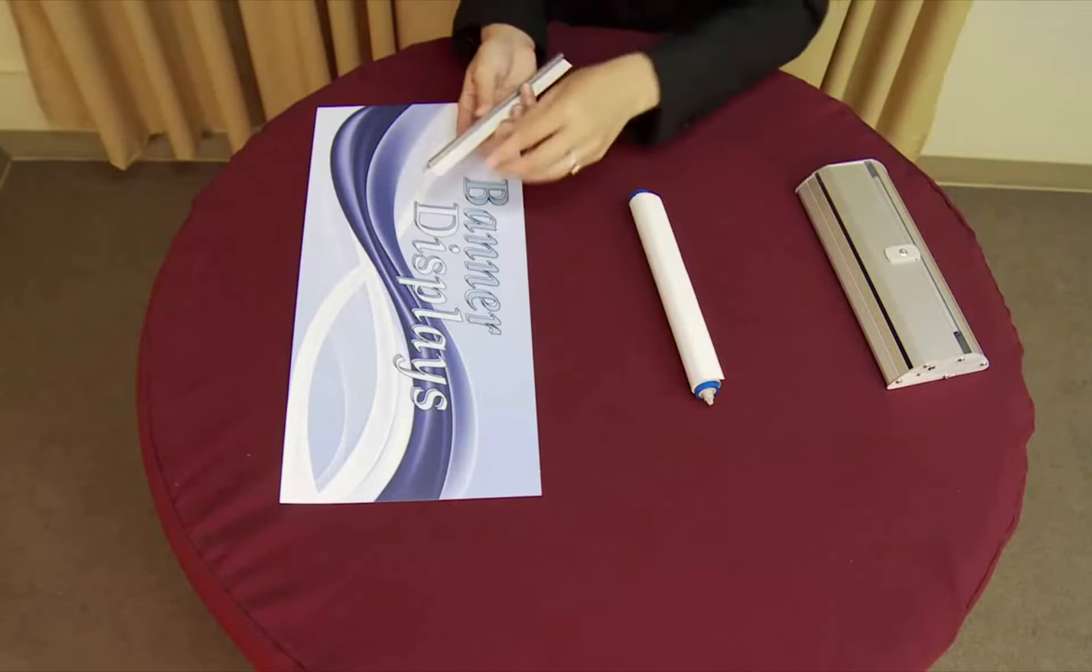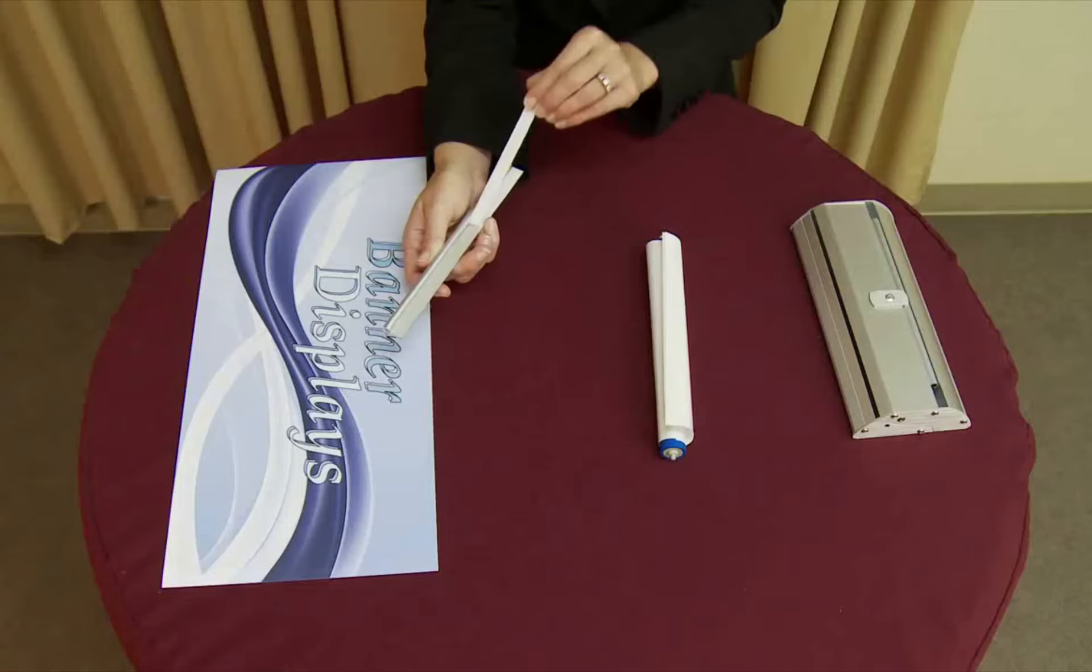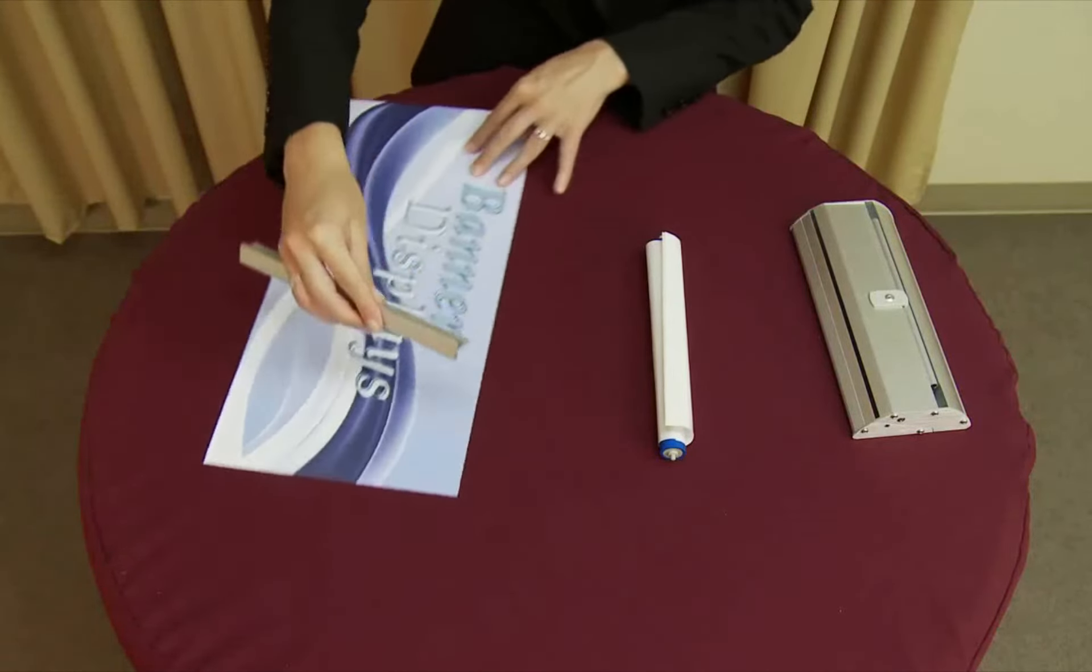Attach the top of your graphic to the banner rail by removing the adhesive strip and carefully placing the banner rail on the back side of the banner.